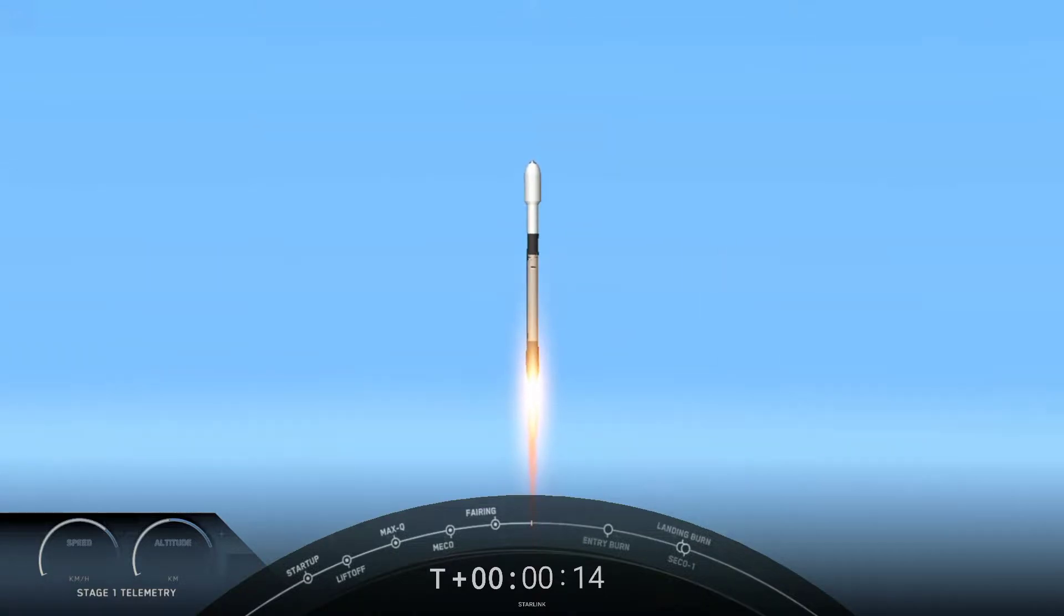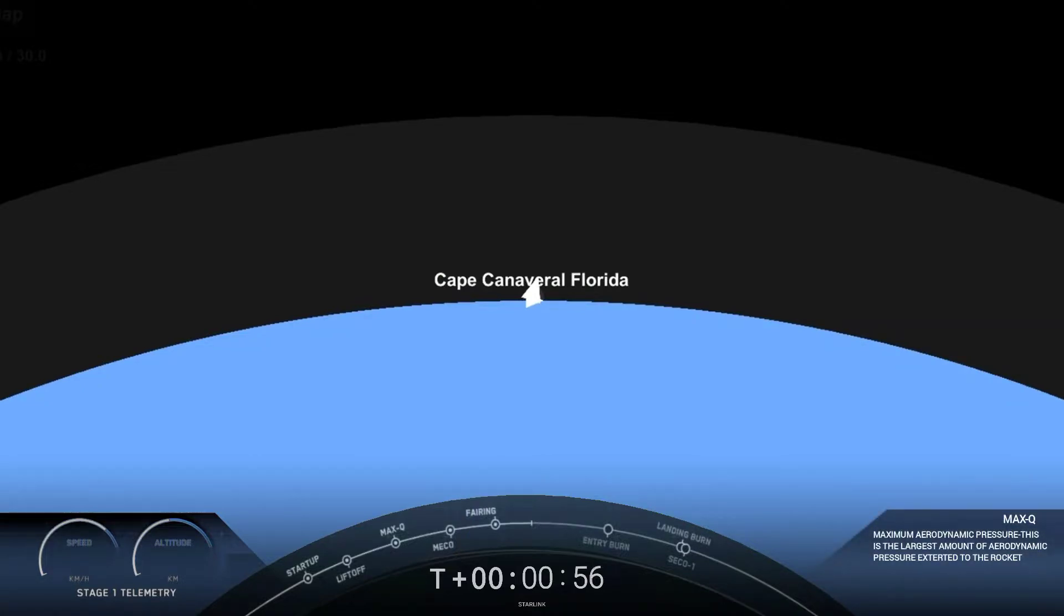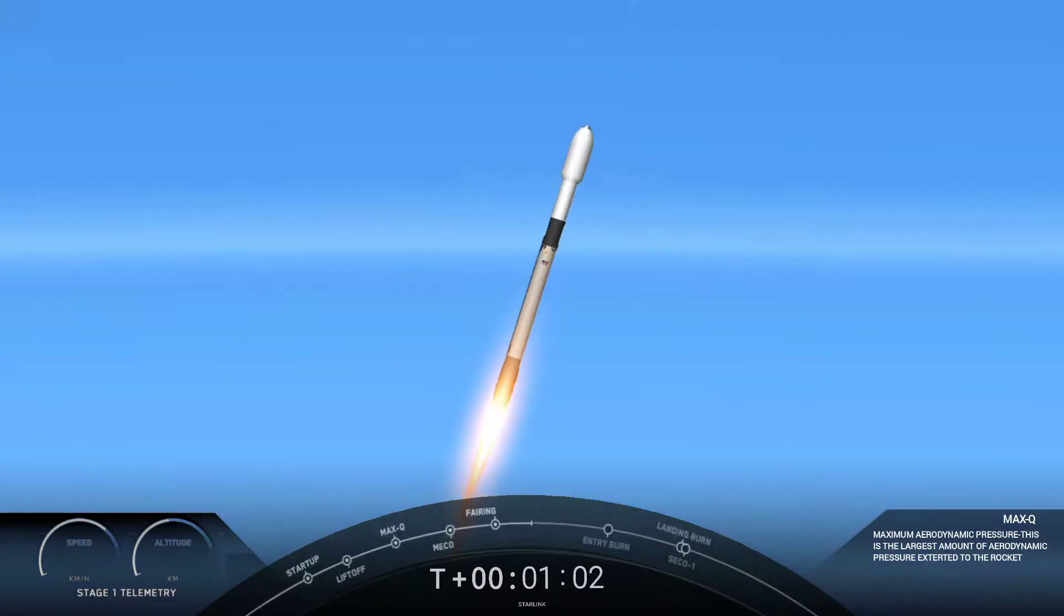Vehicle is pitching downrange. M1D chamber pressure is nominal. Falcon 9 has successfully lifted off from Space Launch Complex 40, carrying our 53 Starlink satellites. Although liftoff gravity is pulling the vehicle straight down, as we ascend, we tilt the engines. Powered telemetry nominal. Tilting those engines is called gimbaling. That turns the rocket horizontally. We are still going up, but we're also heading horizontally away from the launch pad. And that is what we call a gravity turn.